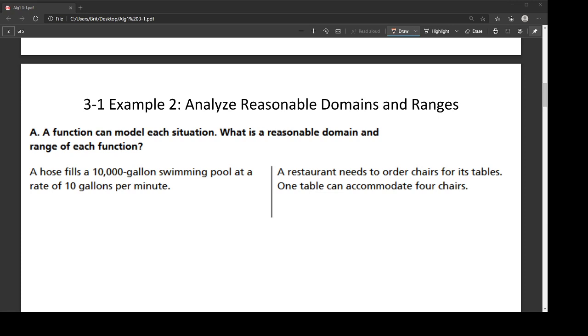So that requires us to figure out what it means by a reasonable domain or range. Usually when we're doing this, we're talking about some kind of real-world situation. The ones I'm looking at in this video are a 10,000-gallon swimming pool getting filled and a restaurant ordering tables and chairs.